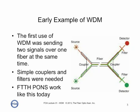Actually, the PON systems — passive optical networks — for fiber to the home work somewhat similar to this today, except they're sending fiber signals in opposite directions at different colors, but the same technique applies.